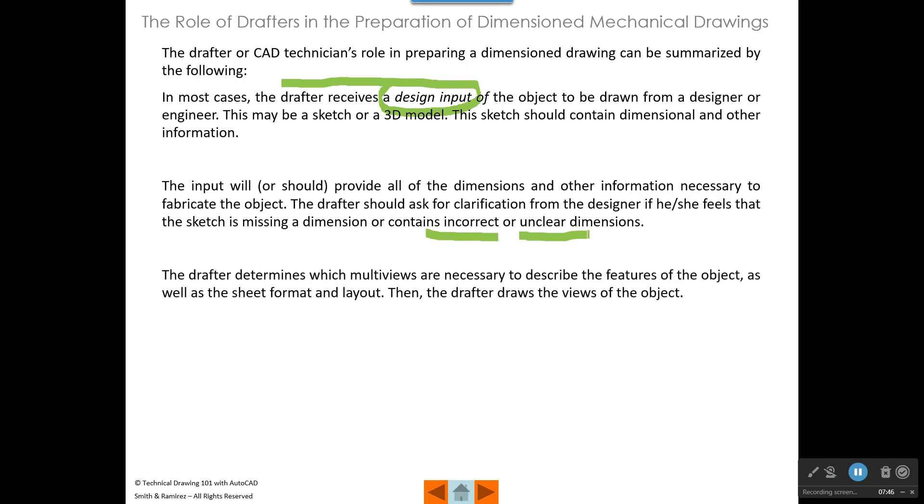The drafter then should determine which multi-views are necessary to describe the features of the object, as well as the sheet format, like the size of the sheet, and the layout. And so the drafter needs to decide, do I need a front view? Do I need a top view? Do I need a side view? Do I need a bottom view? Whatever I need. And usually that's driven by where you need to place the dimensions in their profile view. Then the drafter draws the views of the object accordingly.